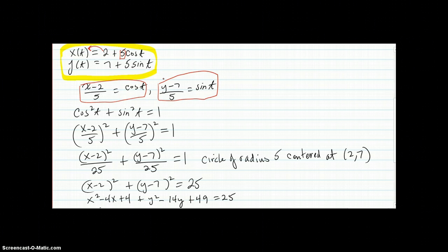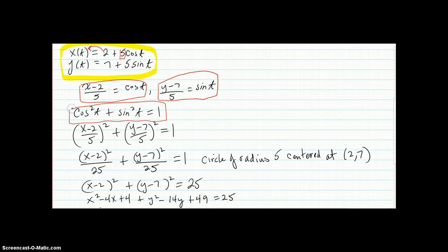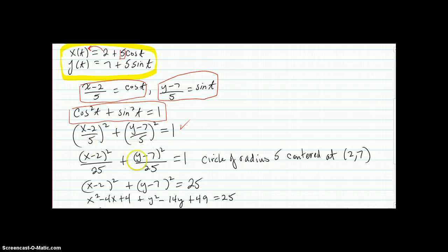Then you realize the identity: cosine squared plus sine squared equals 1. So then you'll have this once you substitute in, and if you square out the denominators you have this.